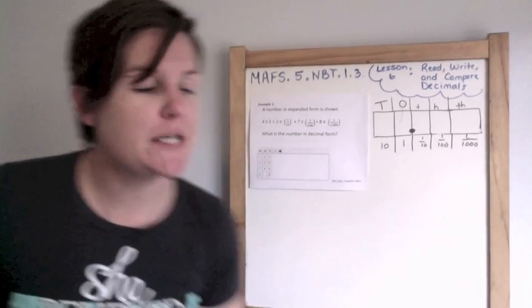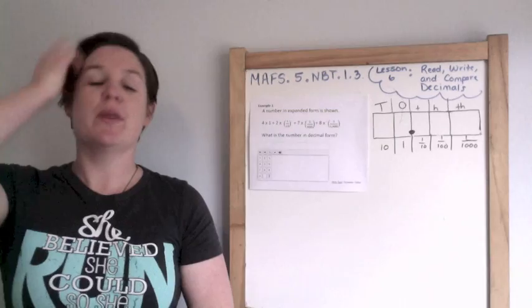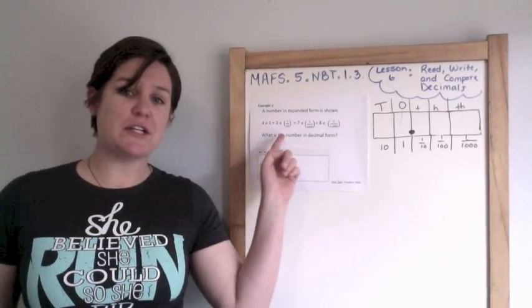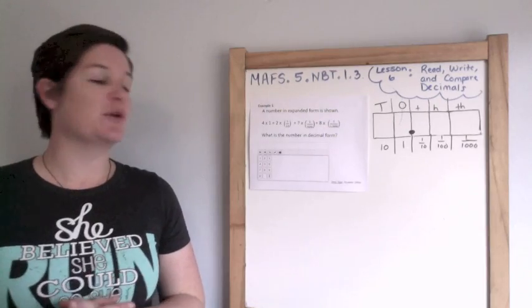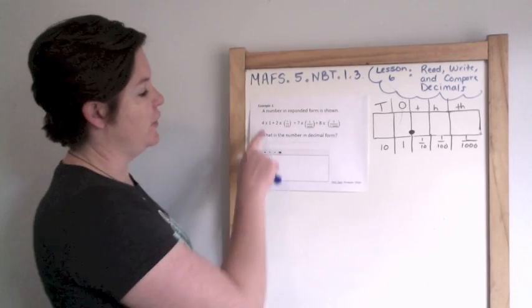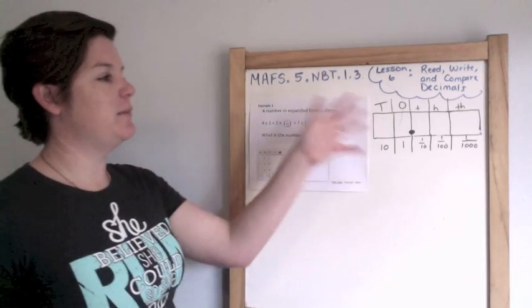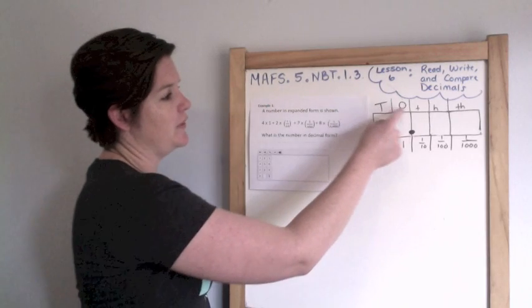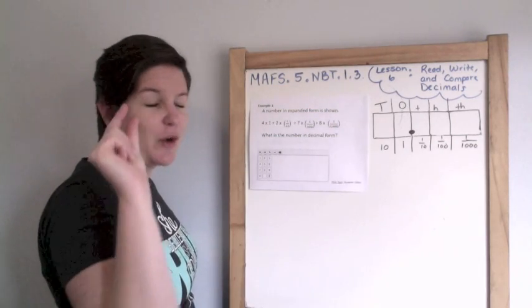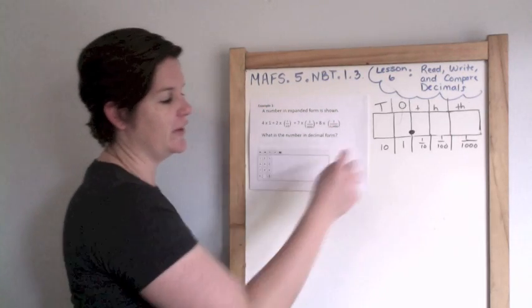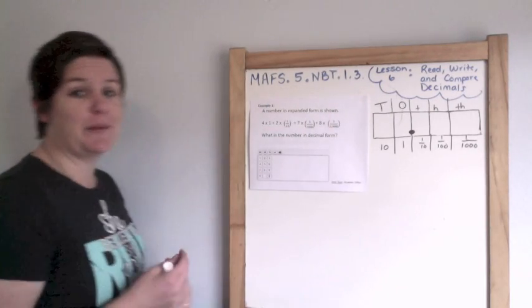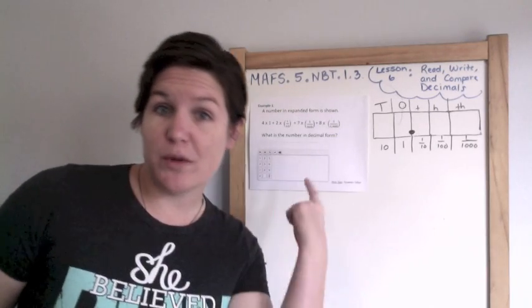Example one. A number in expanded form is shown. I hope y'all are paying attention to this style of expanded form — we are stepping away from the FCAT days, it looks a little different. Notice all the fractions. What is the number in decimal form? We're going to write this in standard form, which they're calling decimal form. I've created a basic place value chart to help us. We've got the decimal, the ones place, tens place, then tenths — I made it a little t because the tenths are way smaller than the tens — hundredths and thousandths. This is what we'd be multiplying by for each place value in expanded form. Stick with me and it'll make more sense as we go.